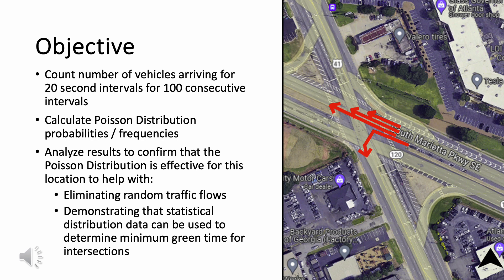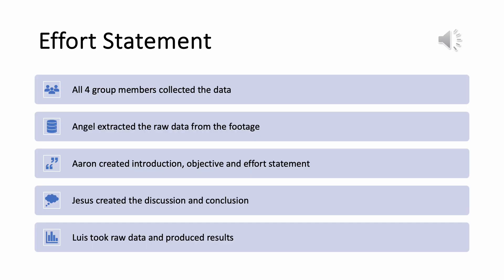We will discuss the application of the Poisson distribution in assessing signalized intersections, and we'll be looking to understand whether traffic arrivals follow a random pattern or are influenced by an external factor. Our group collectively worked together to collect the footage of our project study points. I went through and created our introduction, objective, and effort statements.